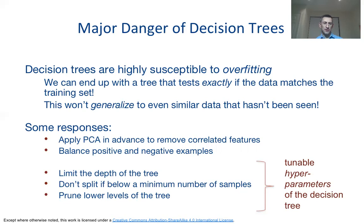What are some of those responses? Well, one thing is that we could remove some of the correlated features from our data, like using PCA. We can also try to develop our sample data to be more balanced, both training and testing. There are also hyperparameters we can use to tune our decision trees in practice — for example, limiting the depth of the tree, not splitting below a minimum number of samples, and pruning the lower levels of the tree.